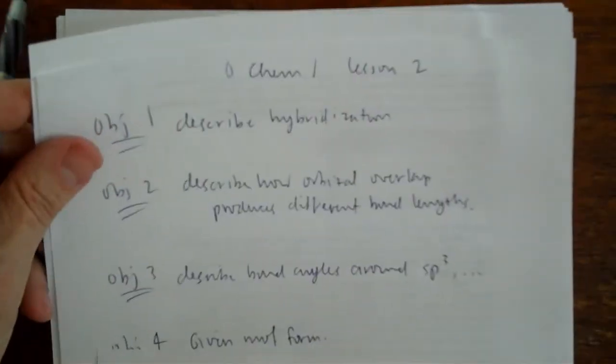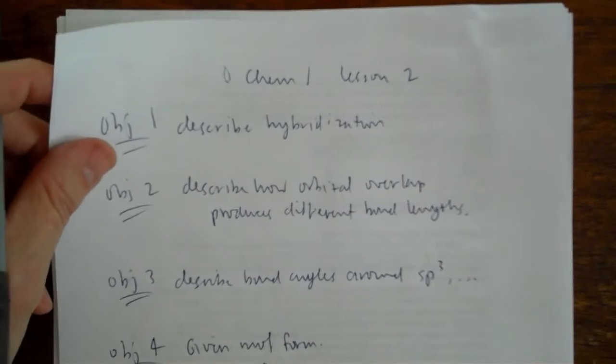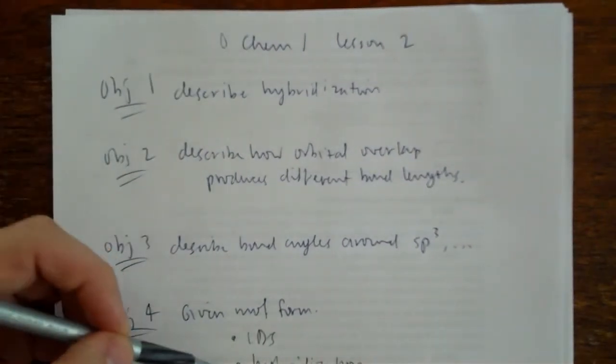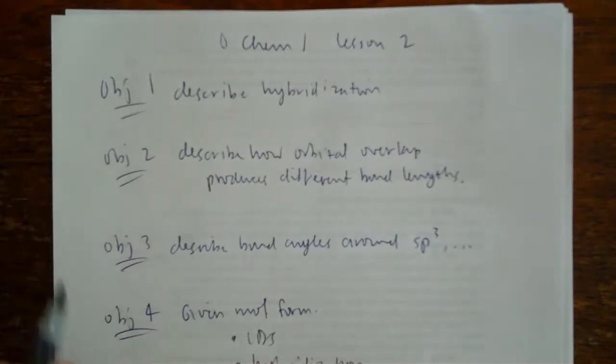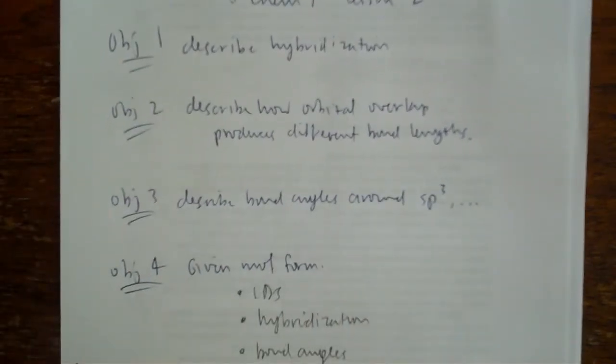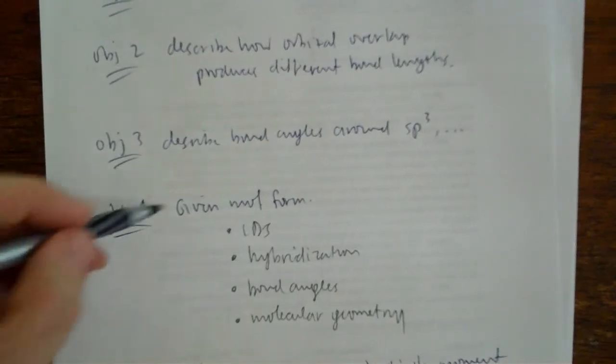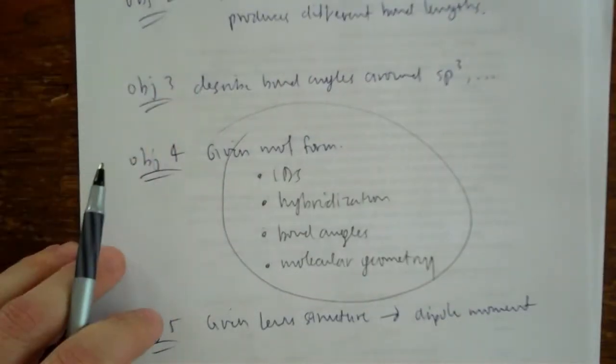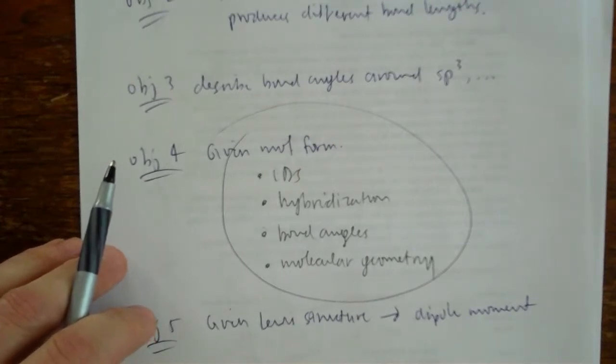Okay, given molecular formula, predict the Lewis dot structure, which we've done, hybridization, which we've touched on, bond angles, and molecular geometry. Let me not do that right now. This is the big deliverable for this lesson, though. Right? This sort of sums up all the things we did in the prior objectives.